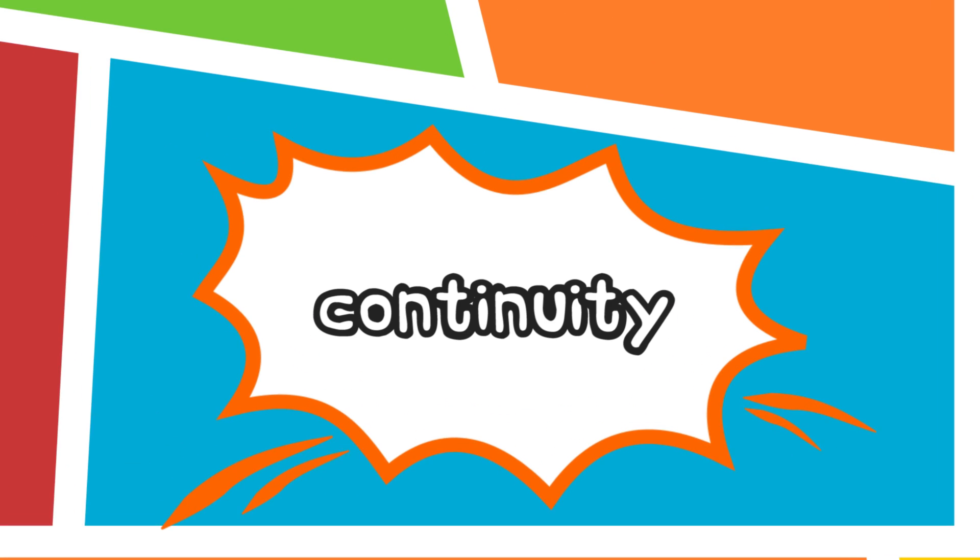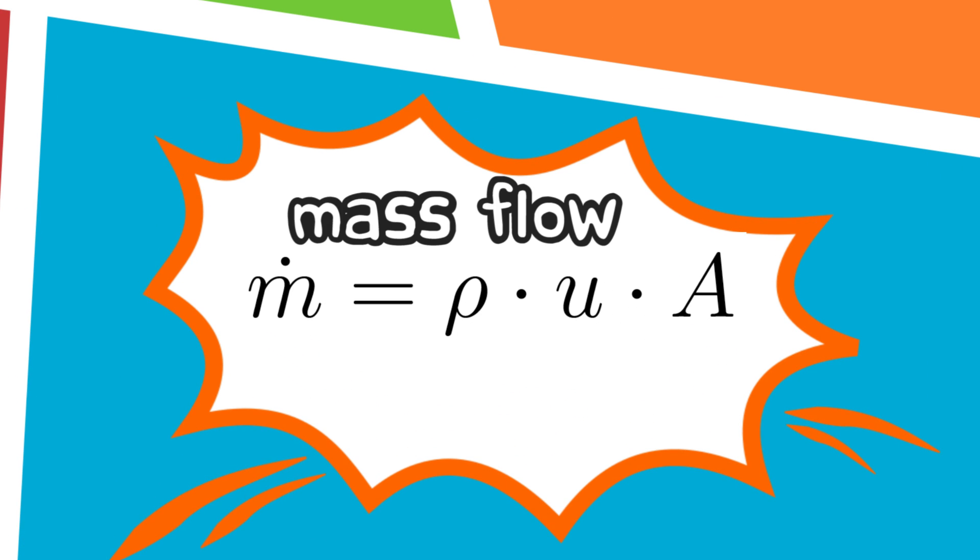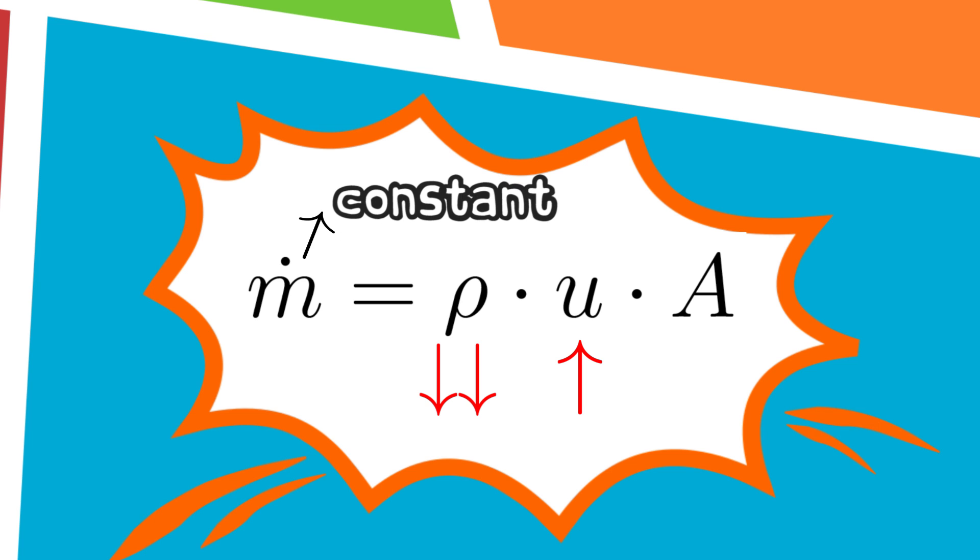At this point, the law of continuity comes into play. We look again at the mass flow. When the flow reaches the speed of sound, the density decreases much faster than the flow can increase its velocity. The only way to have a constant mass flow is to increase the cross-sectional area.